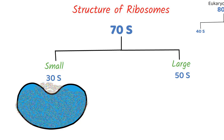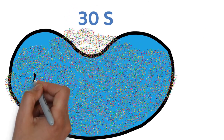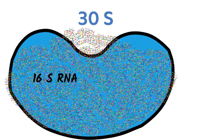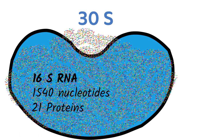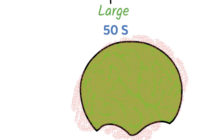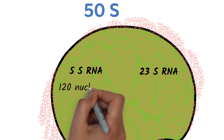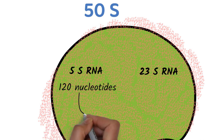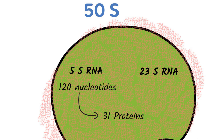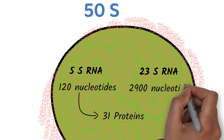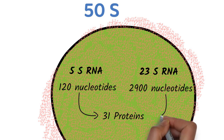The smaller 30S subunit of the 70S ribosome has 16S RNA comprising 1,540 nucleotides bound to 21 proteins. The larger 50S subunit has 5S RNA and 23S RNA. The 5S RNA comprises 120 nucleotides bound to 31 proteins, and the 23S RNA comprises 2,900 nucleotides also bound to 31 proteins.